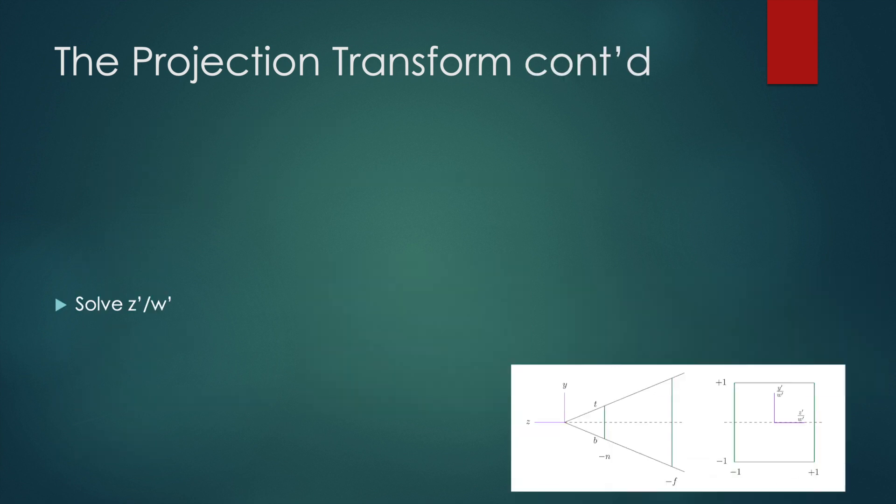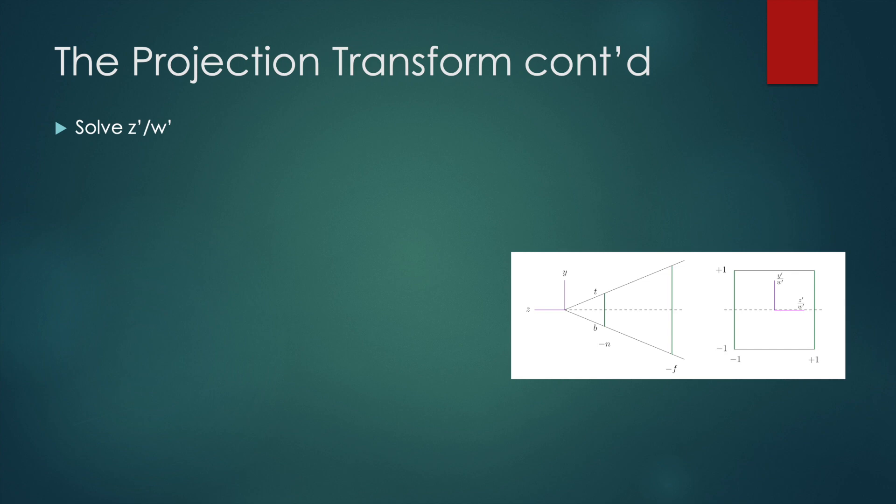Solving for the c and d constants is a little less exact. The ideal equation just squares z so that when we normalize by dividing through by minus z we get z again. You don't want to lose any depth information. But for a given point we don't know what the z will be and so we need to approximate this behavior with our c and d constants.